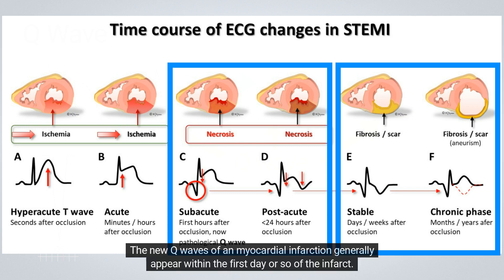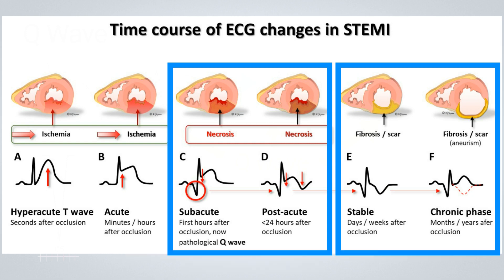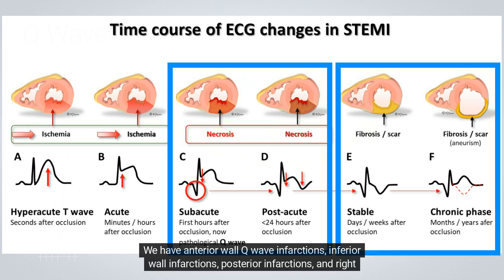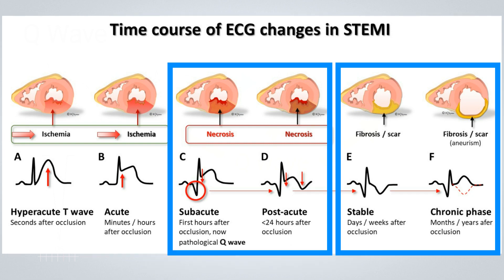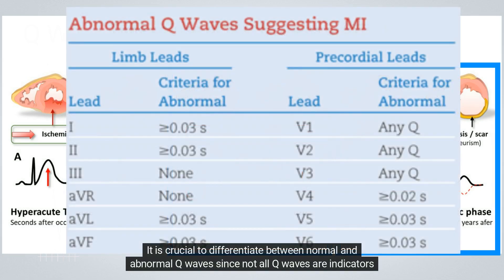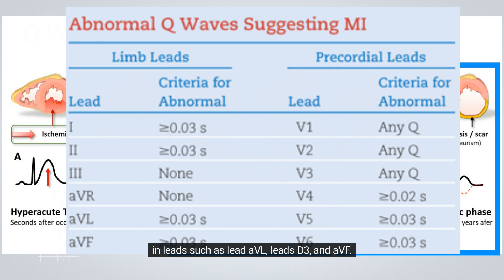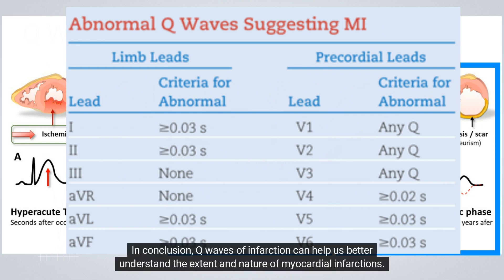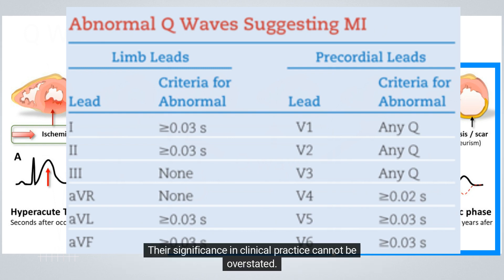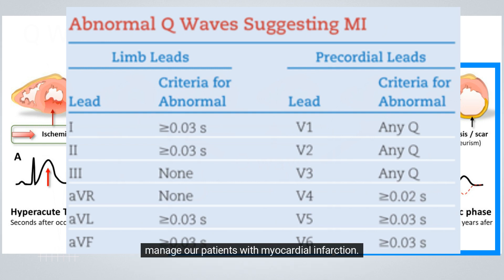The new Q-waves of a myocardial infarction generally appear within the first day or so of the infarct, and their appearance in different leads can help determine the location of the infarction. We have anterior wall Q-wave infarctions, inferior wall infarctions, posterior infarctions, and right ventricular infarctions. It is crucial to differentiate between normal and abnormal Q-waves, since not all Q-waves are indicators of myocardial infarction. Normal septal Q-waves are characteristically narrow and of low amplitude, while abnormal Q-waves may occur in leads such as AVL, D3, and AVF. Q-waves of infarction can help us better understand the extent and nature of myocardial infarctions, and by studying these waves and their characteristics, we can develop effective strategies to diagnose and manage patients with myocardial infarction.